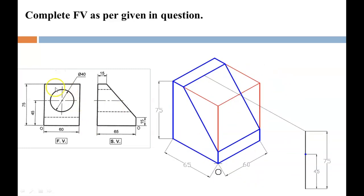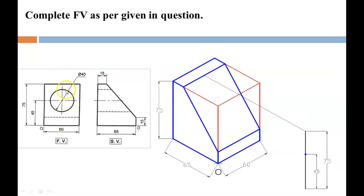Now we will start drawing the circle on the non-isometric plane. First, find the midpoint of this line and draw a line parallel to one of these two lines of random length, then draw a vertical line of 75mm, because the total length is 75mm. This line is the vertical center line of the front view. On this center line, the center of the circle is located 45mm from the base, so plot the center of the circle 45mm from the base.